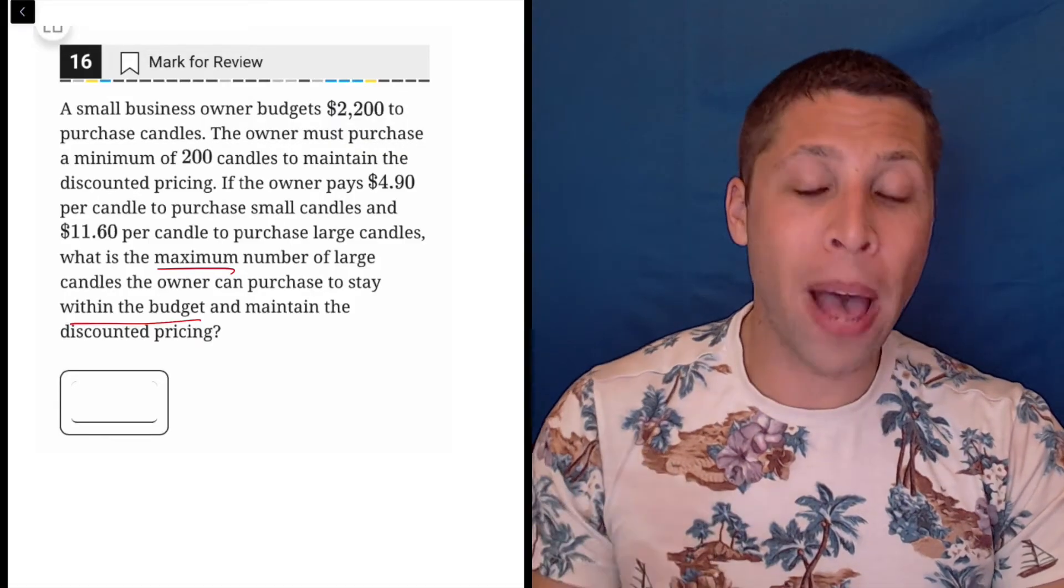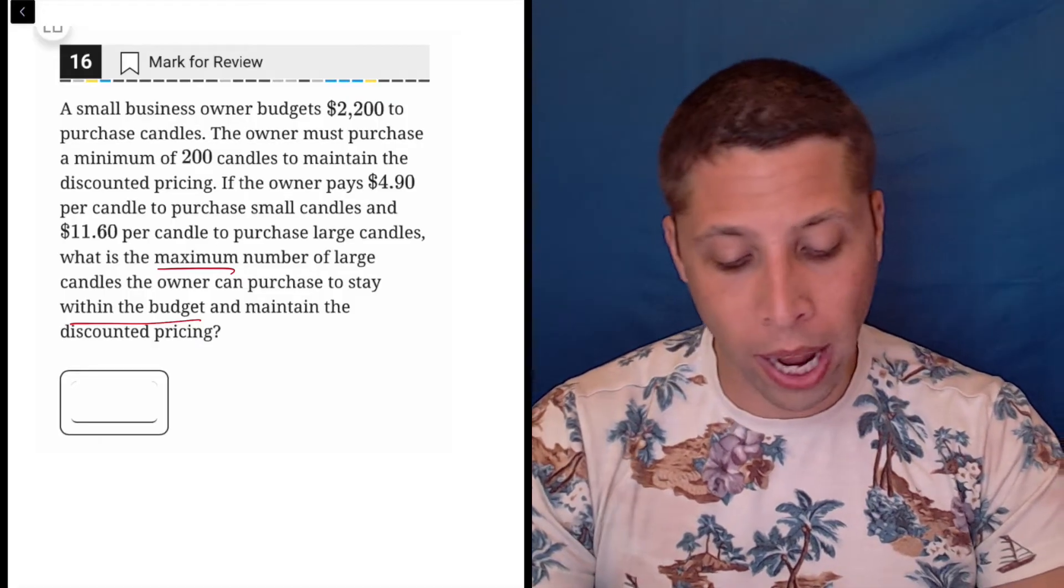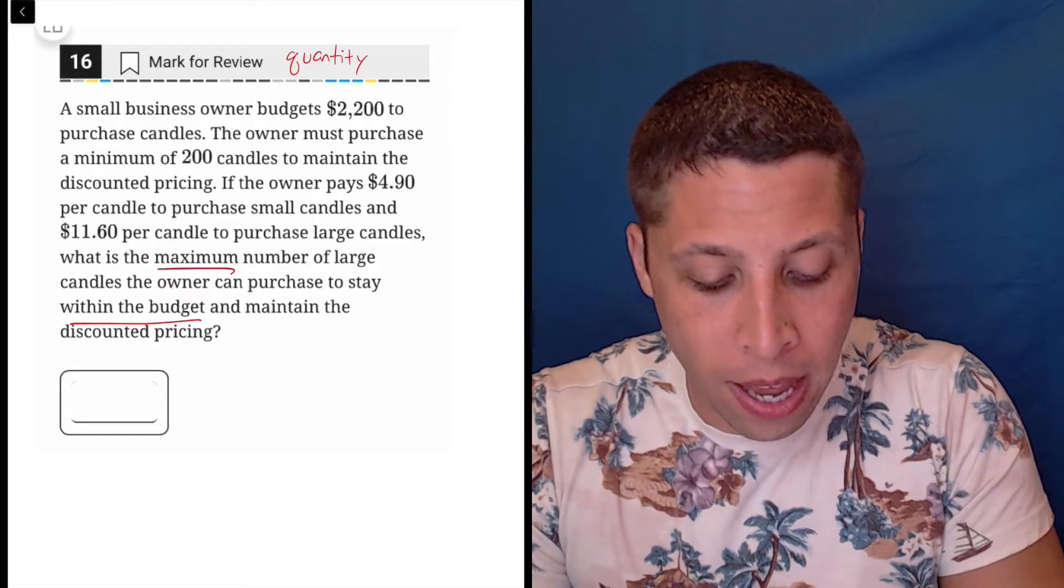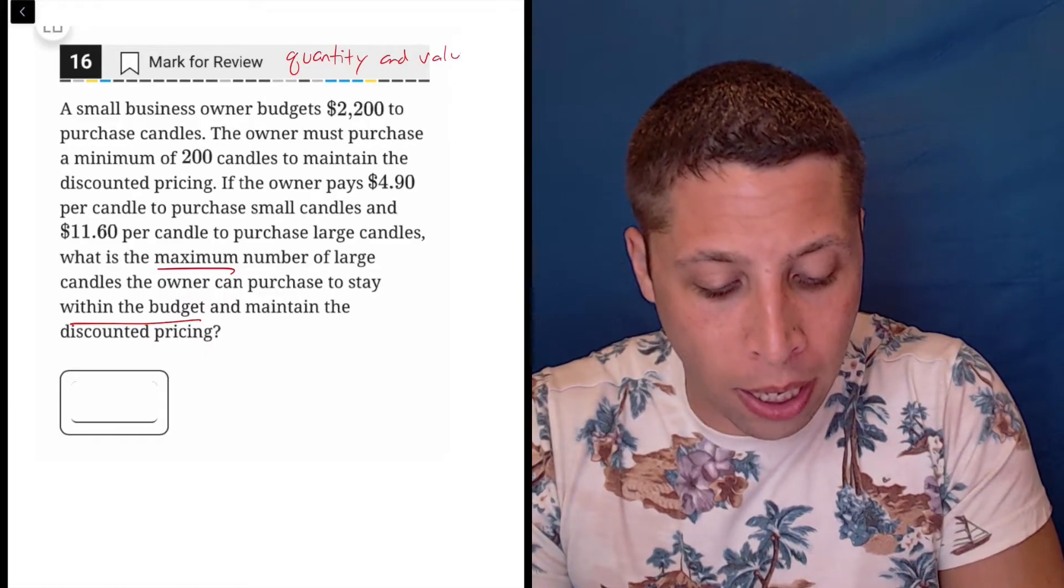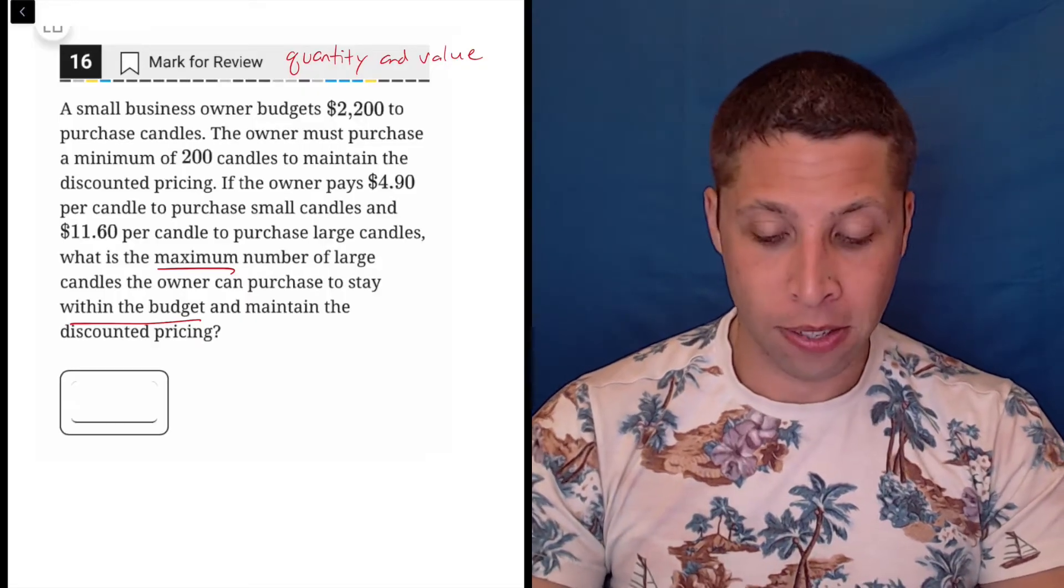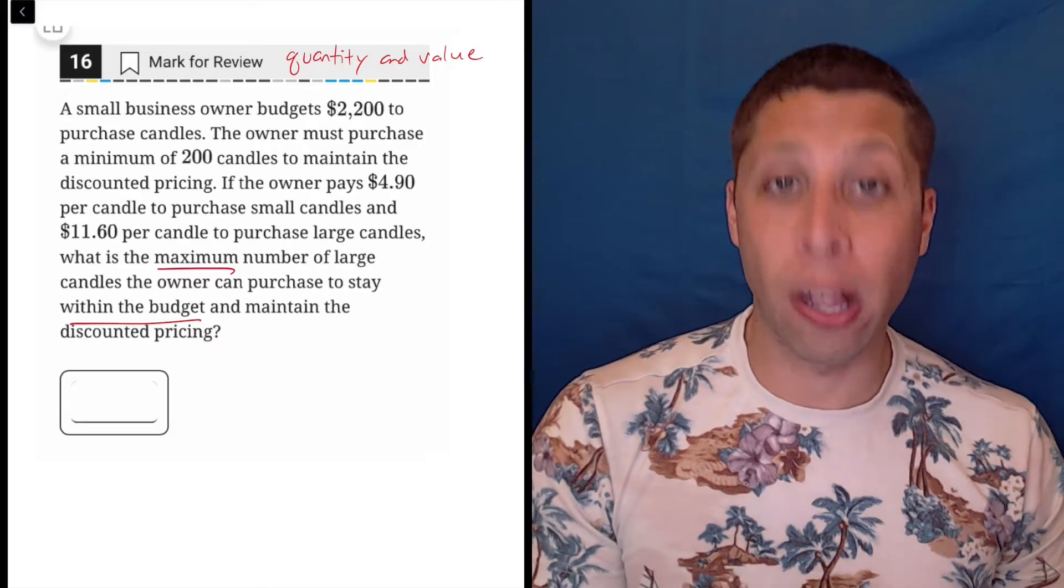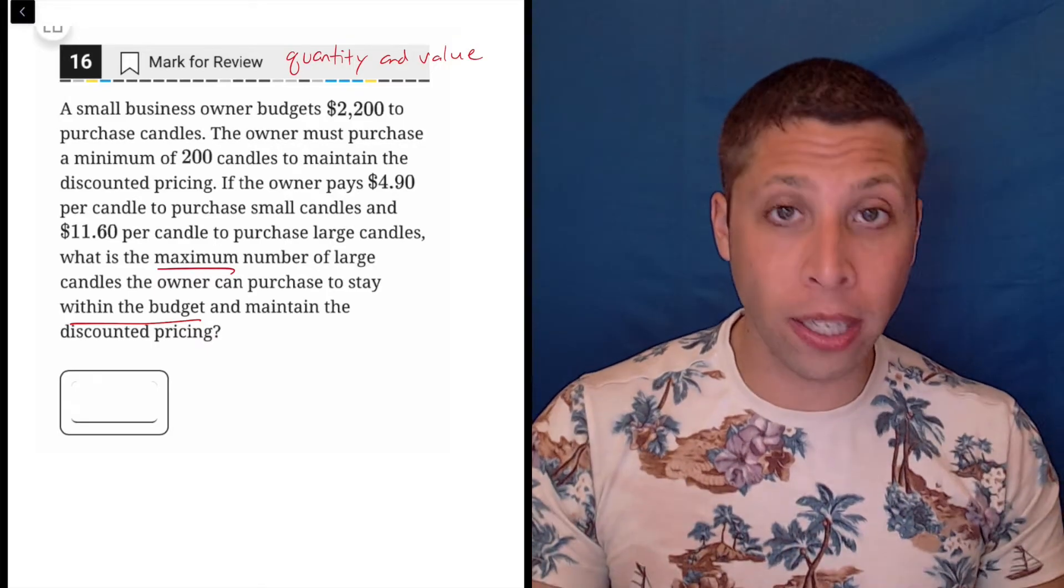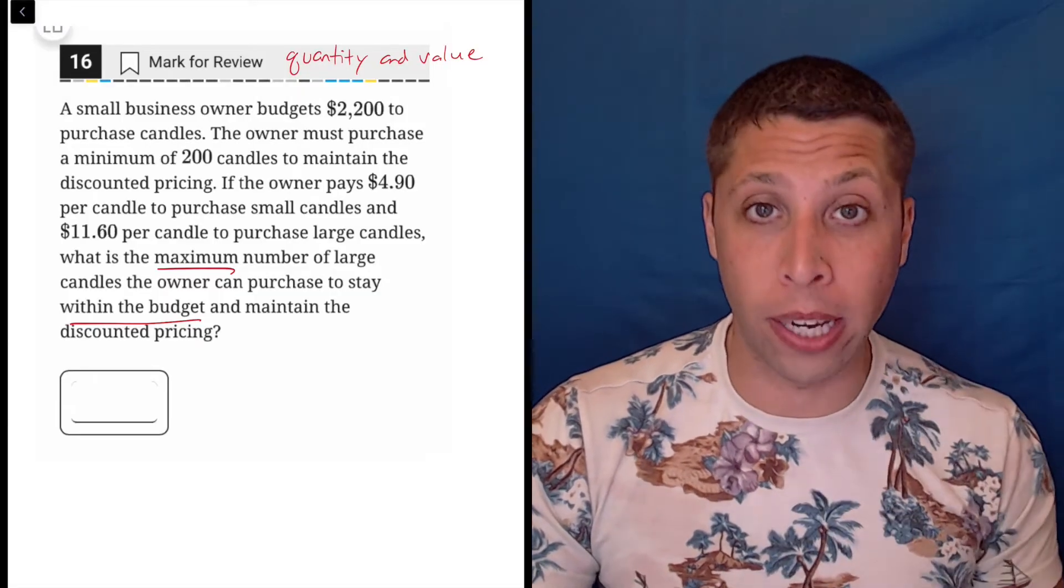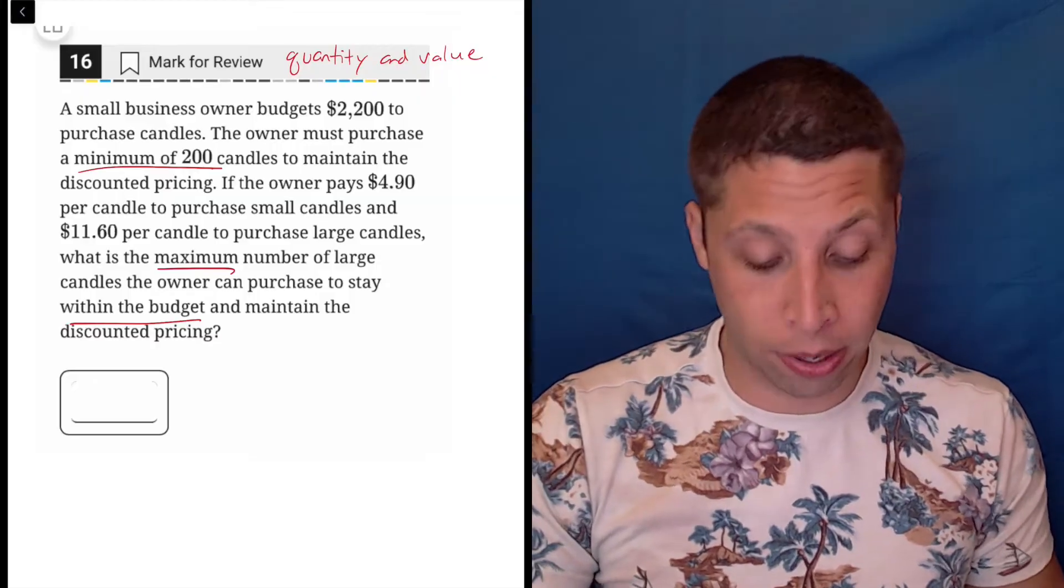For me, it's not so bad because I've seen a lot of questions like this on SATs before. This is what I would call a quantity and value story. Basically, we're given two conditions. One represents the quantity of things that we can buy. The other represents the value of those things. So the quantity is just like how many candles are there.